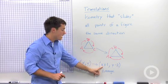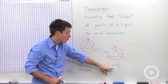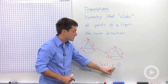So this tells me to take every X coordinate of this triangle and add 1 to it. It tells me to take every Y coordinate of this triangle and subtract 2.